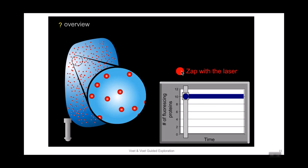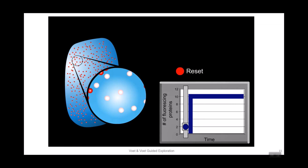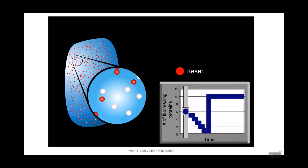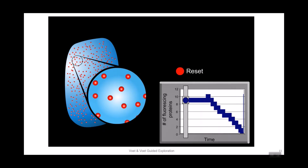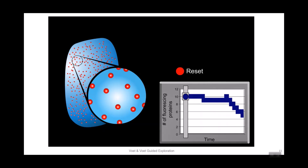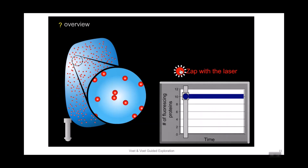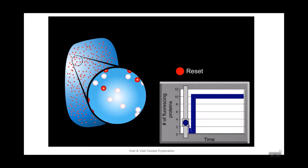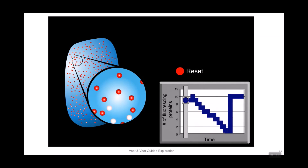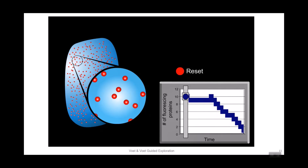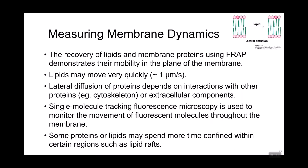This is a simulation of the FRAP experiment where the laser bleaches out fluorescent molecules in a region, and then we monitor the number of fluorescent proteins that move back into the spot. The laser bleaches this region and we start to see the fluorescent molecules move back into the area. FRAP shows how fast things move in the plane of the membrane — whether lipids or proteins — and you can quantify the rate based on the recovery of fluorescent molecules.